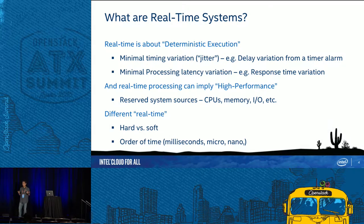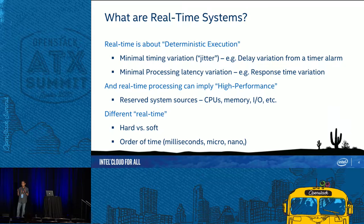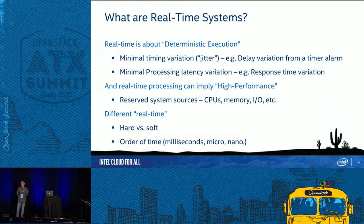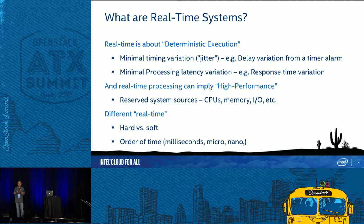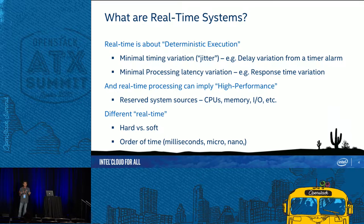There are different meanings of real-time. Hard real-time means you cannot miss a deadline — if you do, there are serious consequences, for example in a nuclear plant or medical system. Soft real-time has a softer deadline that is more of a guideline. Also, the order of magnitude matters: are you talking about milliseconds, microseconds, or even nanoseconds? That really matters.